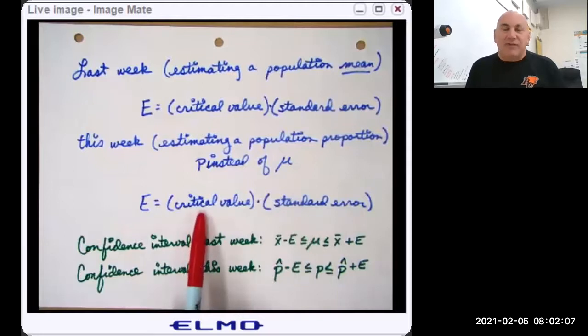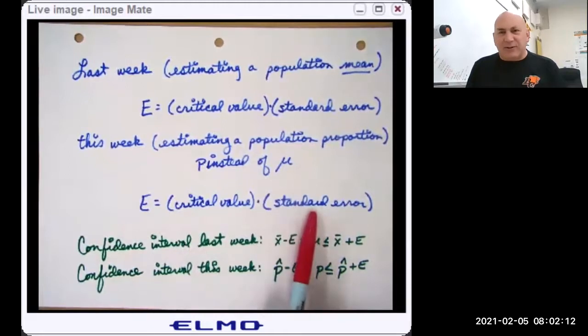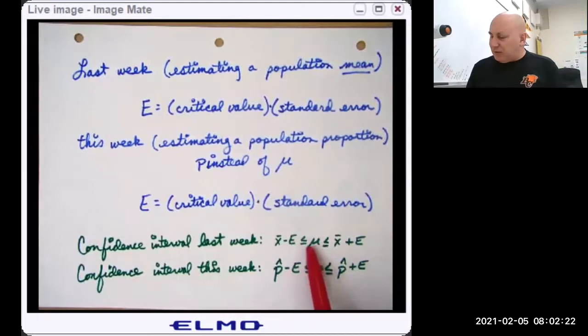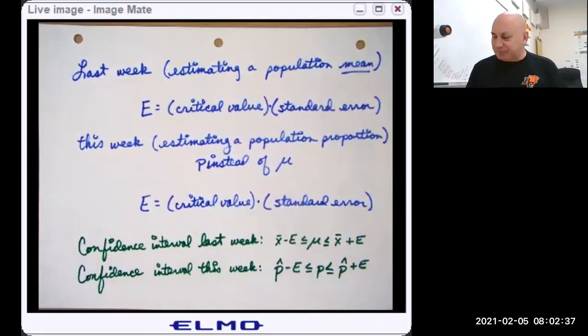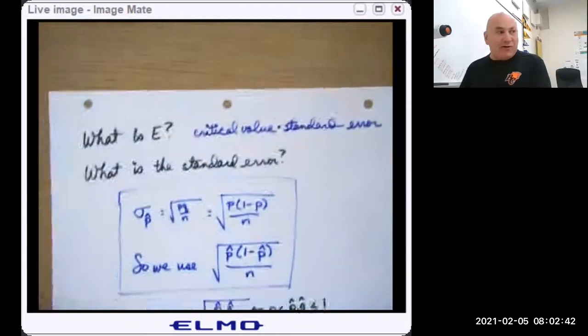But the margin of error is still going to be a critical value times a standard error. So it's still going to be, in fact, I'll just tell you now, it is going to be a Z score. But the standard error is going to be a little different. So here was our confidence interval last week. Mu was in the middle of the interval with X bar plus or minus E, our margin of error. Now we're going to have P, our population proportion, in the middle of an interval, which will be P hat plus or minus E, a margin of error.